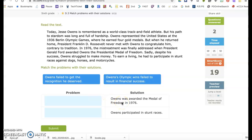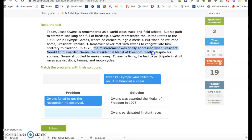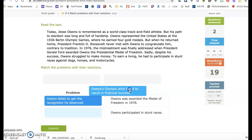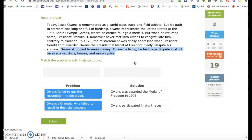So Owens was awarded the Medal of Freedom in 1976. What was the problem that that fixed? Well, that he failed to get the recognition that he deserved, because Franklin D. Roosevelt never met with Owens to congratulate him. But the mistreatment was finally addressed when Ford awarded Owens the Presidential Medal of Freedom. What was the solution of Owens participated in stunt races? What did that help? Owens' Olympic wins failed to result in financial success. Owens struggled to make money. To earn a living, he had to participate in stunt races.